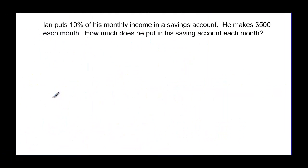Let's get into a little bit more involved problem. Ian puts 10% of his monthly income in a savings account. He makes $500 each month. How much does he put in his account each month? We want 10% of his monthly income, so 10% times his monthly income of $500. We would translate that to 10% or 0.1 times 500, and that would be 50. He puts $50 in each month.